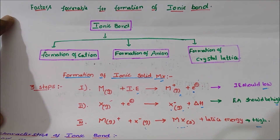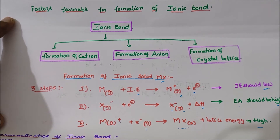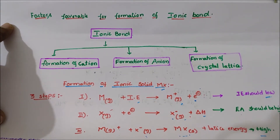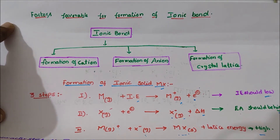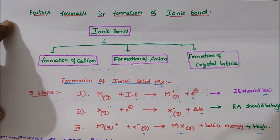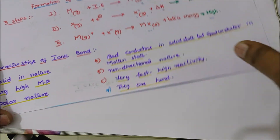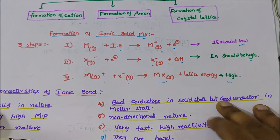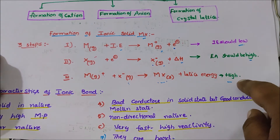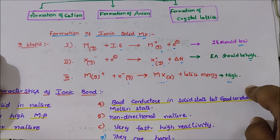Welcome to Lavanya Chemistry Classes. In this video lesson we are going to discuss the formation of ionic bond. The factors favorable for formation of ionic bond are: formation of cation, formation of anion, and formation of crystal lattice. These three factors are favorable for formation of ionic bond.